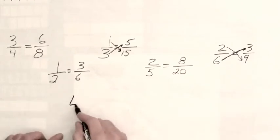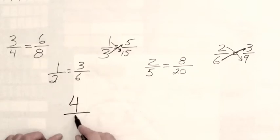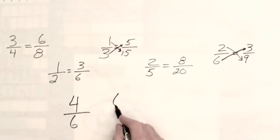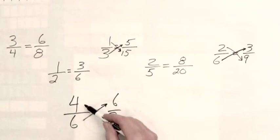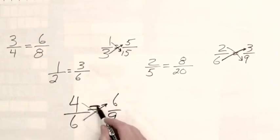For example, let's pick a couple of fractions here: four over six, six over nine. Are these fractions equal? Well, six times six is thirty-six, four times nine is thirty-six, so these fractions are equal.